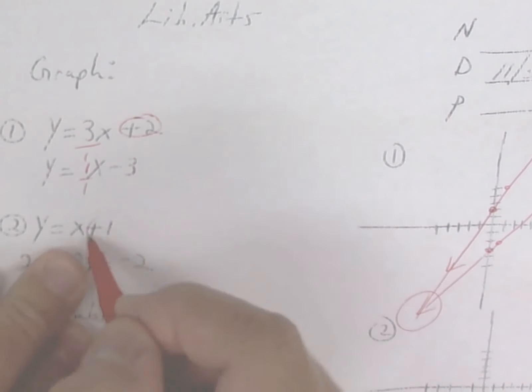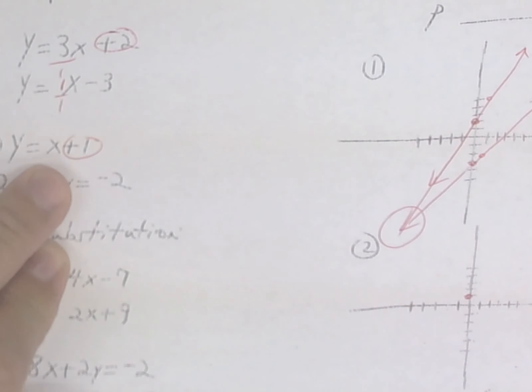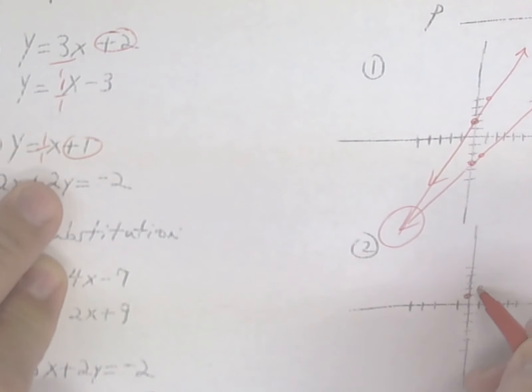This one, the y-intercept is 1, so you're going to go up 1. The slope is 1 over 1, so you're going to go up 1 over 1. And it looks like that.